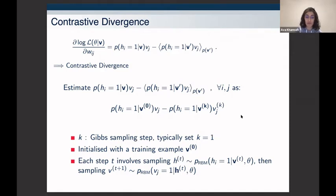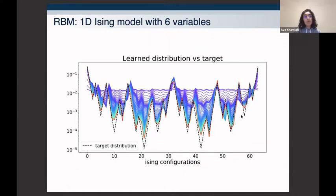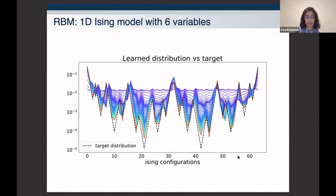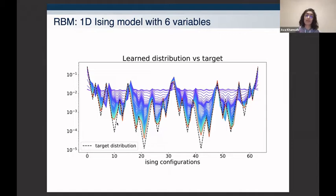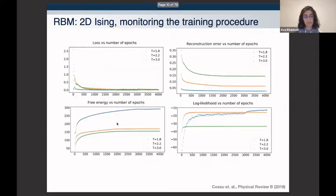Training the machine on Ising configurations using only six variables for illustration, we can plot the probabilities of each of the 2^6 = 64 possible states on the x-axis. The dotted lines are the real theoretical values and the colored plots show the machine training over epochs — starting from a uniform distribution since it has no knowledge, then gradually settling into the hills and valleys of the distribution. The red lines are the final trained probability distribution of the machine, which nicely depicts the actual underlying probability distribution.